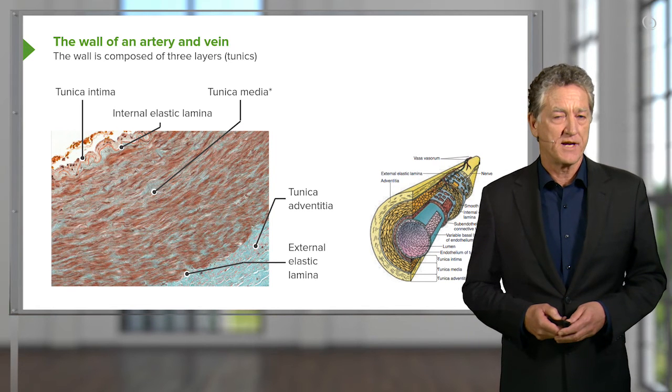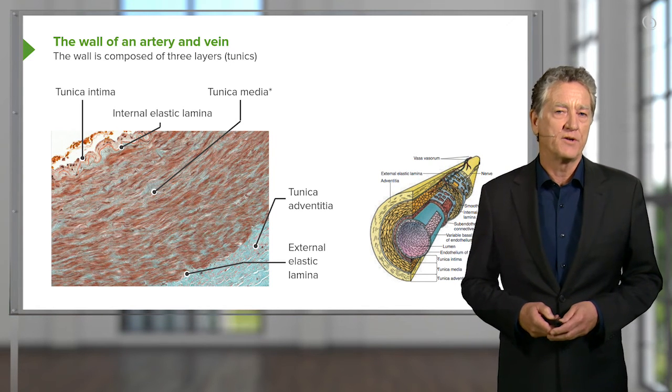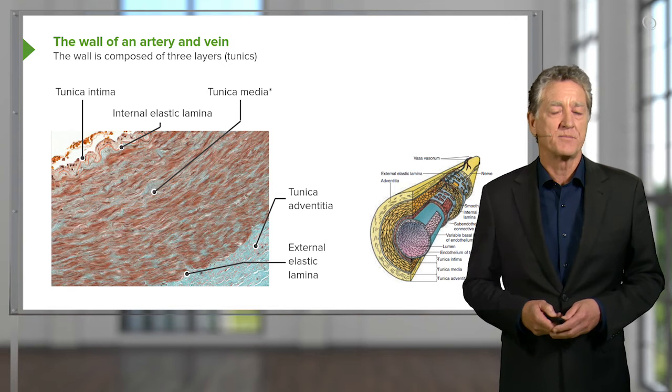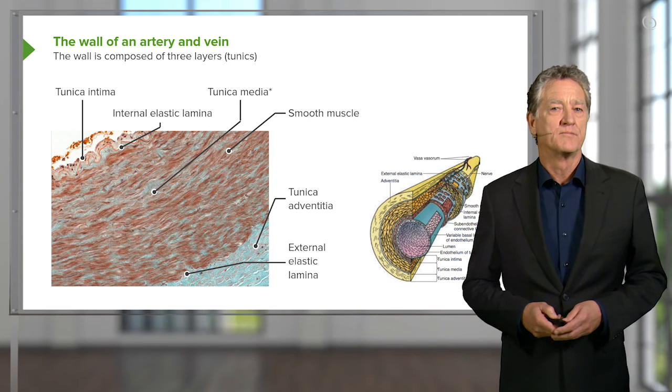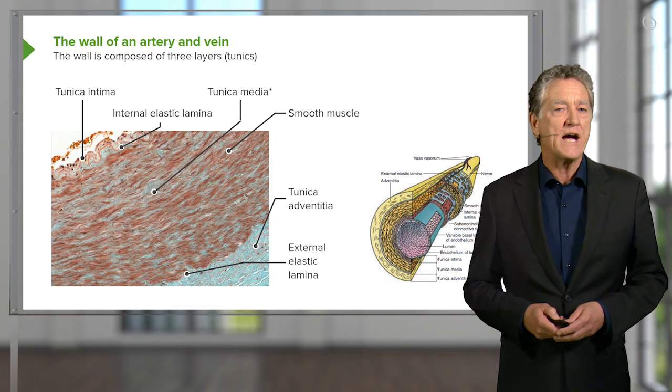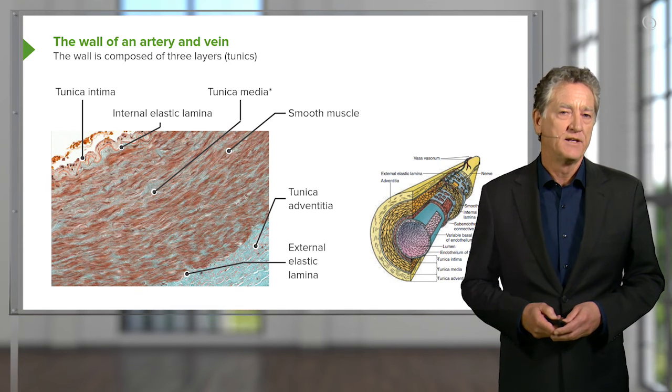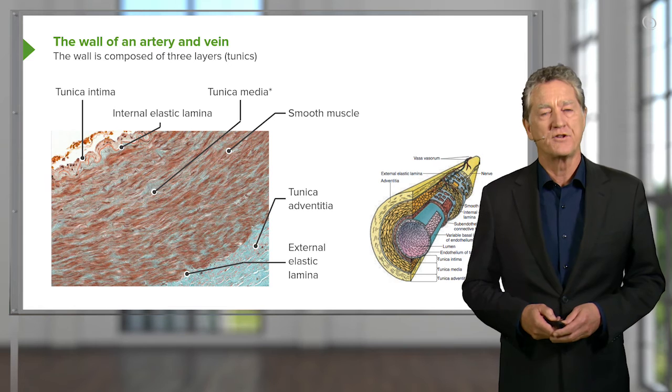This is a good stain to show you the components of an artery and similarly a vein because it shows you smooth muscle. Smooth muscle is the brownish component you see making up the wall of the tunica media.